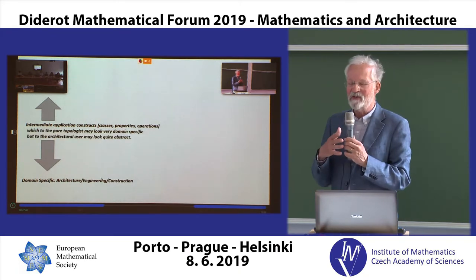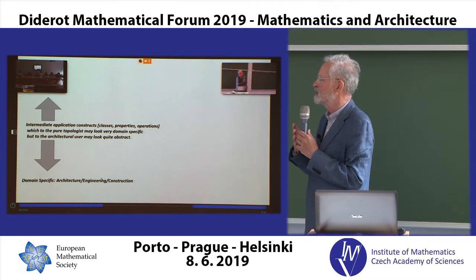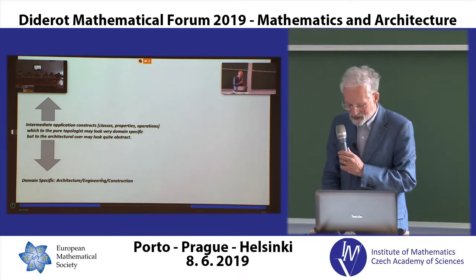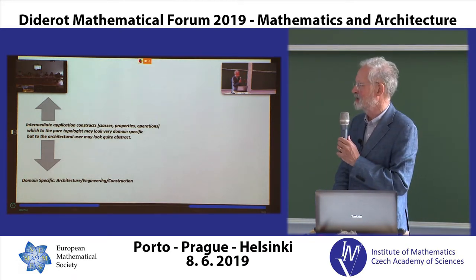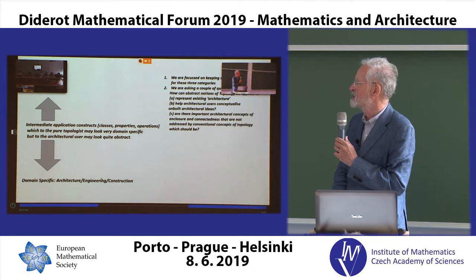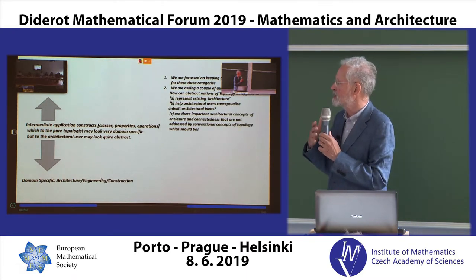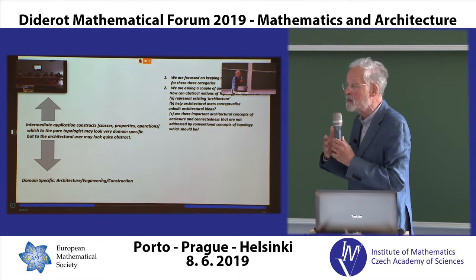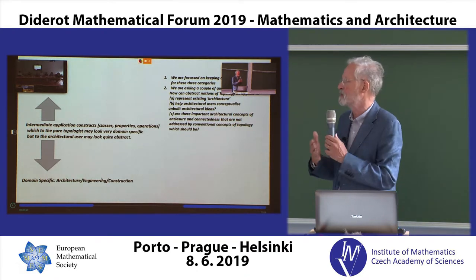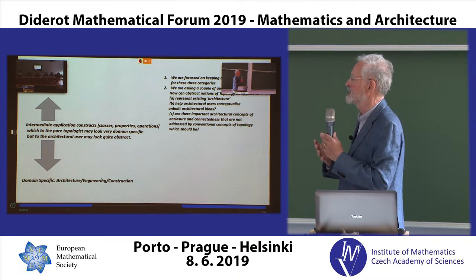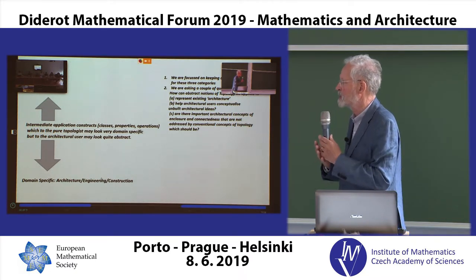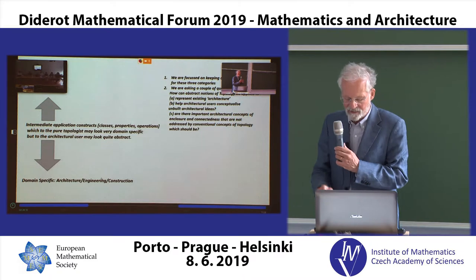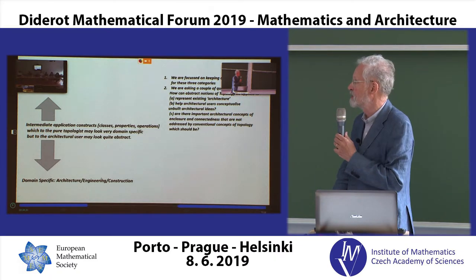This is a very paradoxical experience because to the pure topologist, what we're doing may look very domain-specific, but to the architectural user, this most probably looks quite abstract and unusual. In our work, we're trying to keep these distinctive categories and keep the terminology completely separate, so we don't mix up architectural concepts with topological concepts. We're asking: how can we represent existing architecture, think about unbuilt architecture, and are there important concepts in architecture not addressed by conventional topology that should be represented?